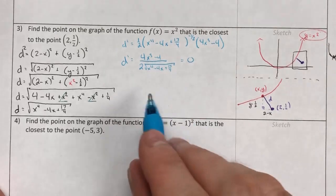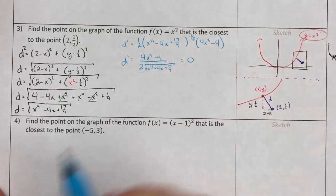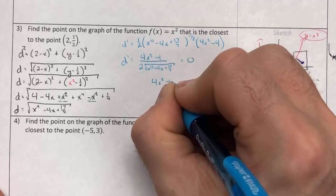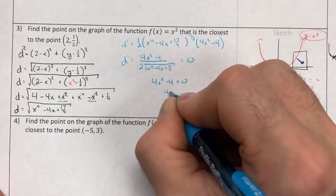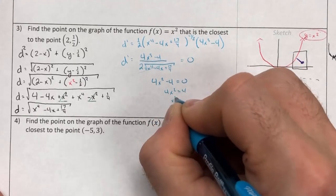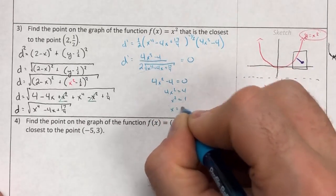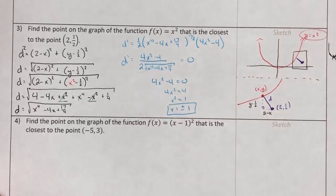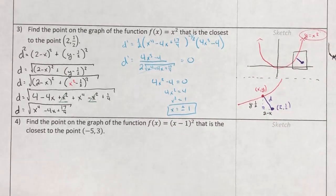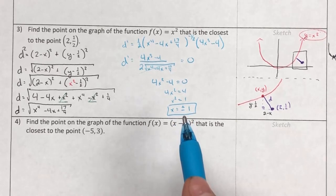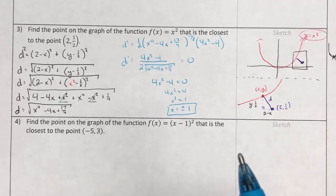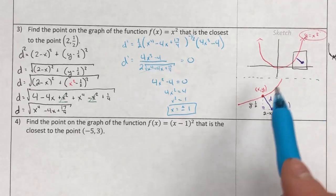Setting d′ = 0, I can ignore the denominator and focus on the numerator: 4x³ − 4 = 0, so 4x³ = 4, x² = 1, and x = ±1. I have two critical points at x = 1 and x = −1.